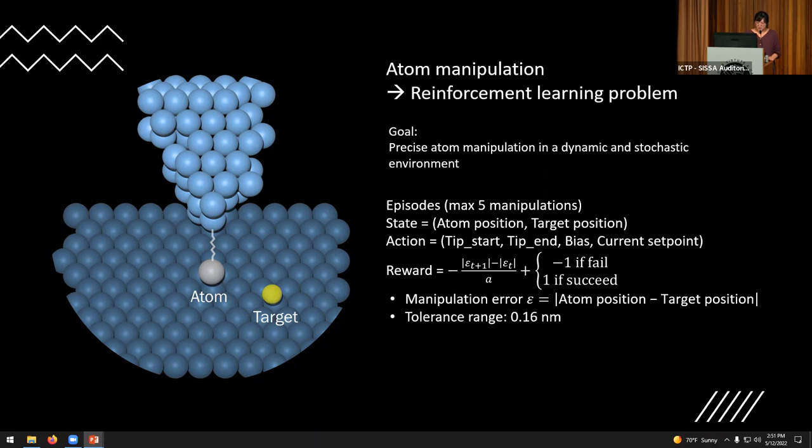And then we need to decide on the reward that the agent will receive. So here, how we design it is that the reward will be separated into two parts here. So the first part depends on how much the manipulation error has improved based on the specific action. And the second part depends on whether the agent was able to move the atom towards the target position within some tolerance range.